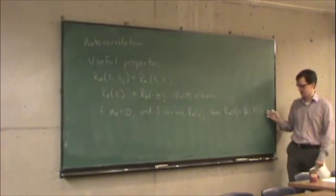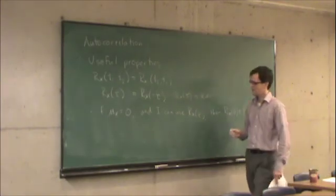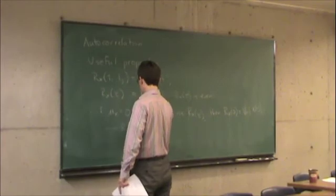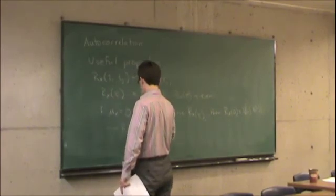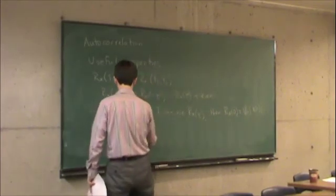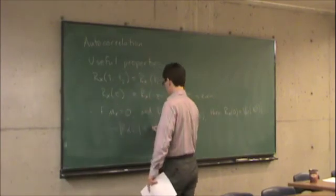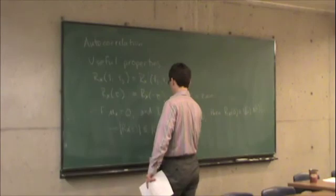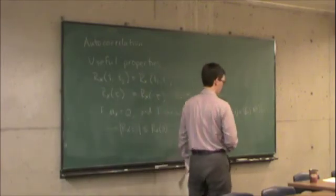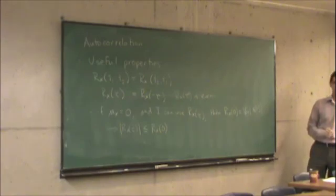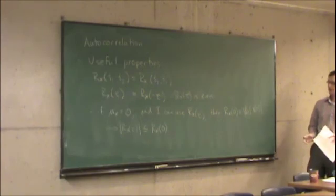Combined with the theorem I showed you earlier, that also means that the magnitude of Rx of tau is less than or equal to Rx of zero. So in other words, the autocorrelation function takes its maximum value at zero, and everywhere else it decays. That makes sense. That correlation should decay away from a particular value.